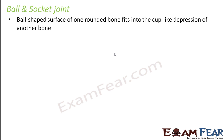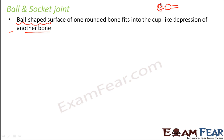The name ball and socket is quite interesting. Here we have a ball-shaped surface of one bone — one end of one bone is in the shape of a ball, which fits into the cup-like depression of another bone. Basically you have one bone shaped like a ball and another like a socket, and this bone fits into that socket. Since the ball-shaped bone fits into the socket, there is enough flexibility — the ball-like structure can actually move the way it wants within that socket.